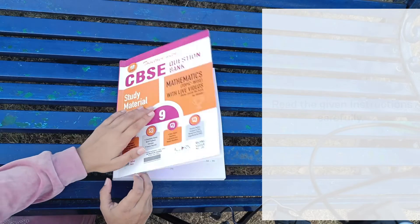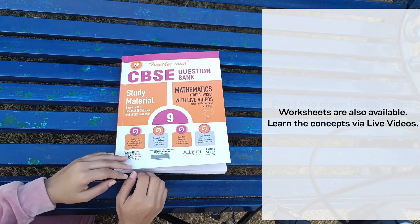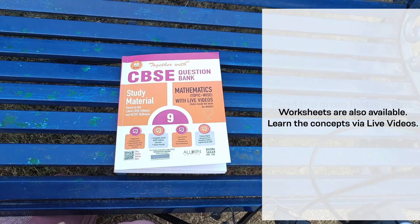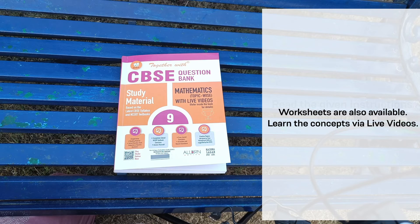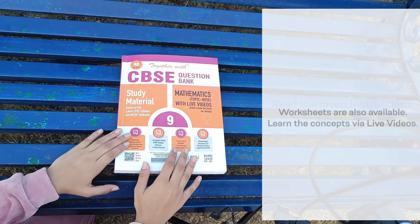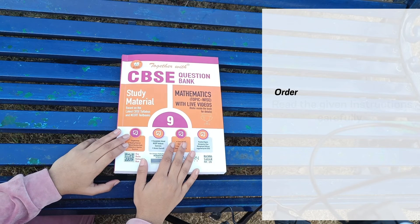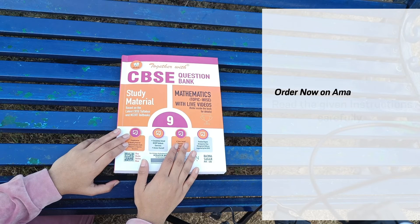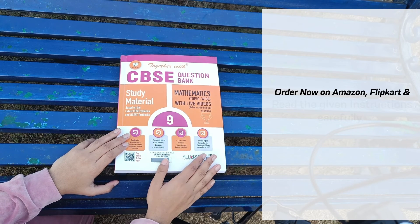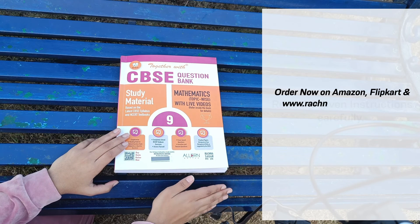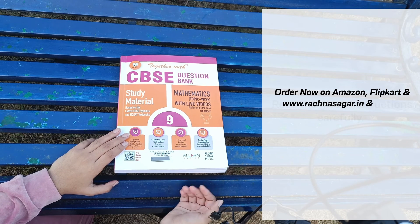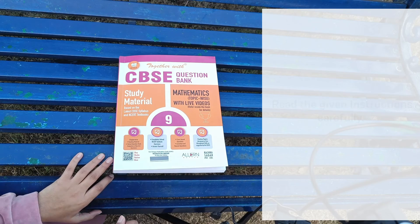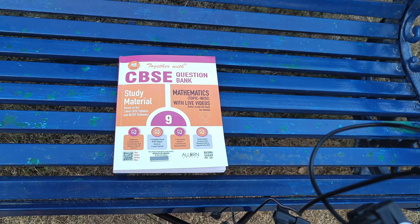The iLearn app also gives you worksheets to prepare for your exams. You can access those worksheets and learn topic-wise chapters with live videos. The book is really interesting. You can buy this book from online platforms such as Amazon and Flipkart, and it is also available online on www.trachnasagar.in and at your nearby stores.